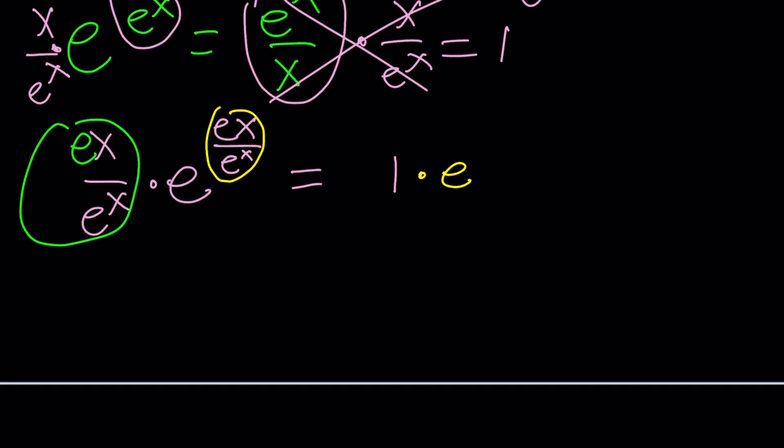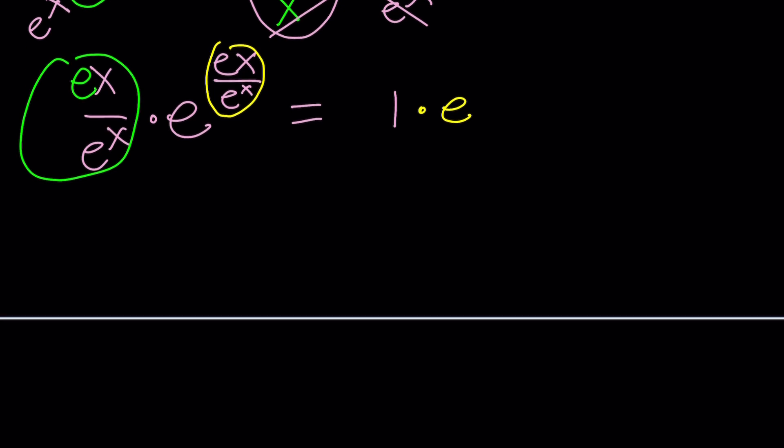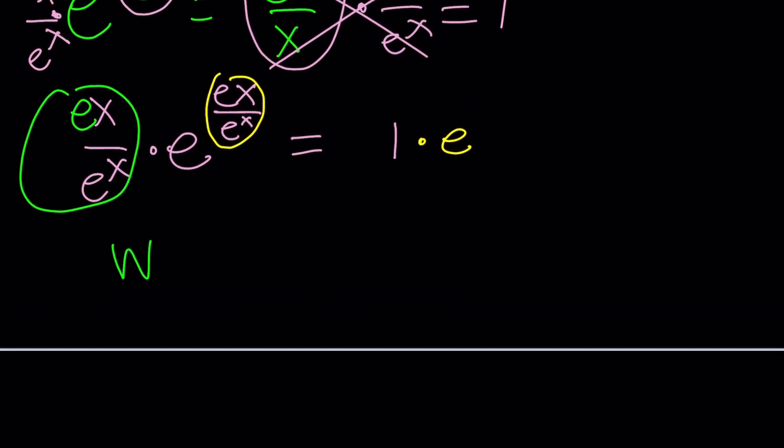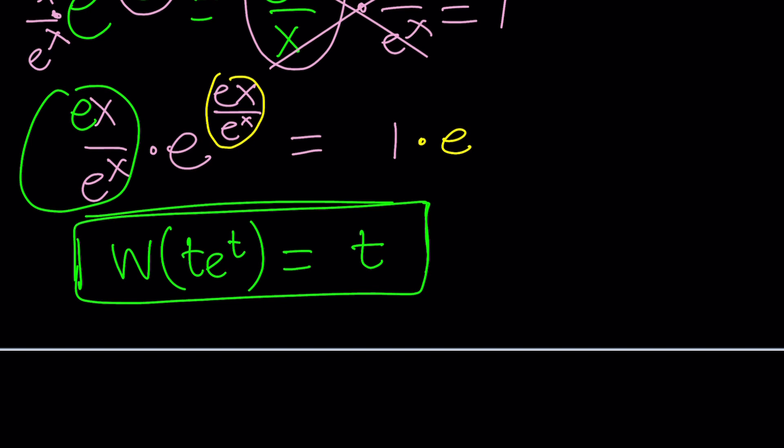Lambert's w function. Ta-da! That super super special product log. So what is Lambert's w function? You make a big w, put the t e to the t as your input and your output will be t. It's as simple as that. Just know this and hopefully you can solve some problems, maybe a lot of problems.